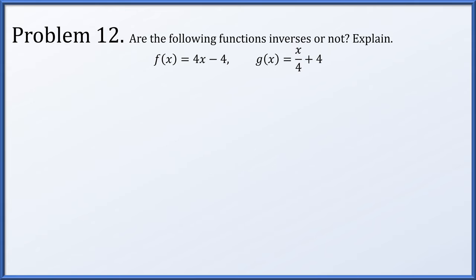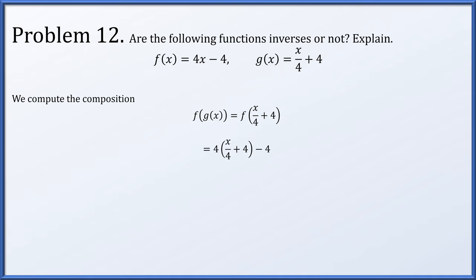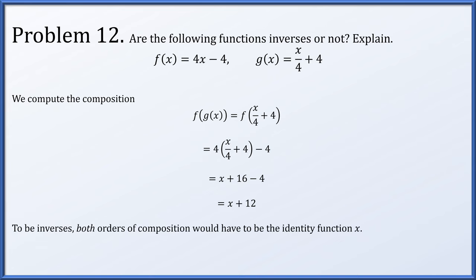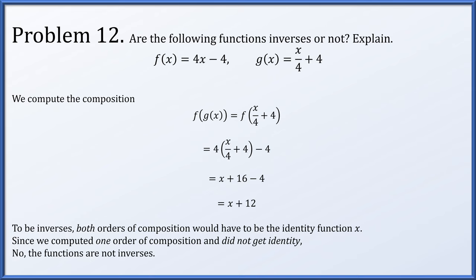Problem 12: Are f(x) = 4x - 4 and g(x) = x/4 + 4 inverses? Let's compute f(g(x)) = 4(x/4 + 4) - 4 = x + 16 - 4 = x + 12. If they were inverses, both orders of composition would give the identity x. We got x + 12 instead. So no, they are not inverses.